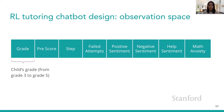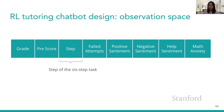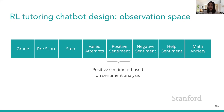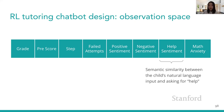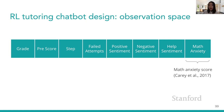In the observation space, the chatbot has access to children's grade, children's pre-score, which step of the six-step task the kid is in, how many times the kid has failed, positive sentiment, negative sentiment, and help sentiment — the semantic similarity between children's natural language input and asking for help. We also gave children a math anxiety survey before they started. Children's grades, pre-score, and math anxiety scores are static variables, while the rest are affected by the chatbot's actions during interaction.